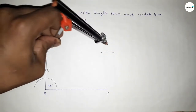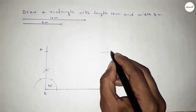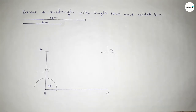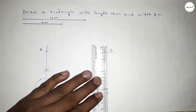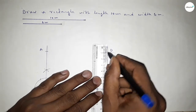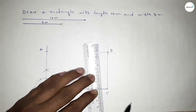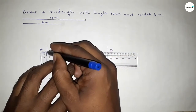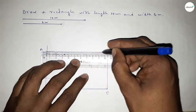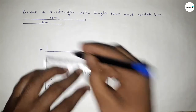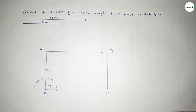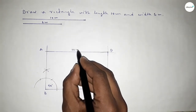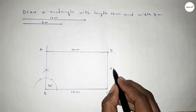Now taking the length 10 centimeter using the compass, putting the compass here and cutting here. Both curves intersect at point D. Joining C and D first, then joining A and D. So this side is 10 centimeter, this side is 10 centimeter, this side is 6 centimeter, and this side is also 6 centimeter.